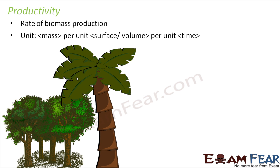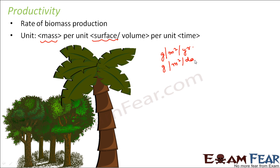How do we measure productivity? It has specific units: mass per unit surface or volume per unit time — that means how much volume of the product is being formed in a particular period of time. Some units commonly used are grams per meter squared per year, where gram is the unit of mass and meter squared is the unit of area. It can also be measured as grams per meter squared per day, or kilocalories per meter squared per year.